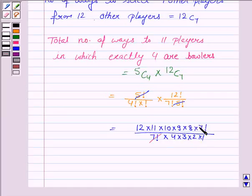Now, 7 factorial gets cancelled with 7 factorial. 4 into 3 is 12, and it gets cancelled with 12. And now this is equal to 11 into 5 into 9 into 8, and it is equal to 3960.